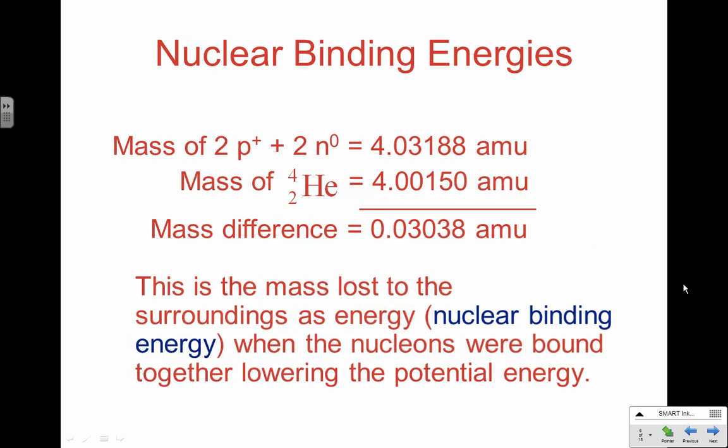How can we calculate what that nuclear binding energy is? For helium-4, which has two protons and two neutrons, we add up the actual masses of those nucleons and get 4.03188 atomic mass units. But the actual mass of helium-4 is only 4.00150 atomic mass units — we're short by 0.03038 amu. That is the mass defect, the mass converted to energy to hold the nucleus together, known as nuclear binding energy. We can take that mass and plug it into E = mc² to calculate the energy. This is mass lost to the surroundings as energy when the nucleons were bound together, lowering potential energy and making a stable nucleus.